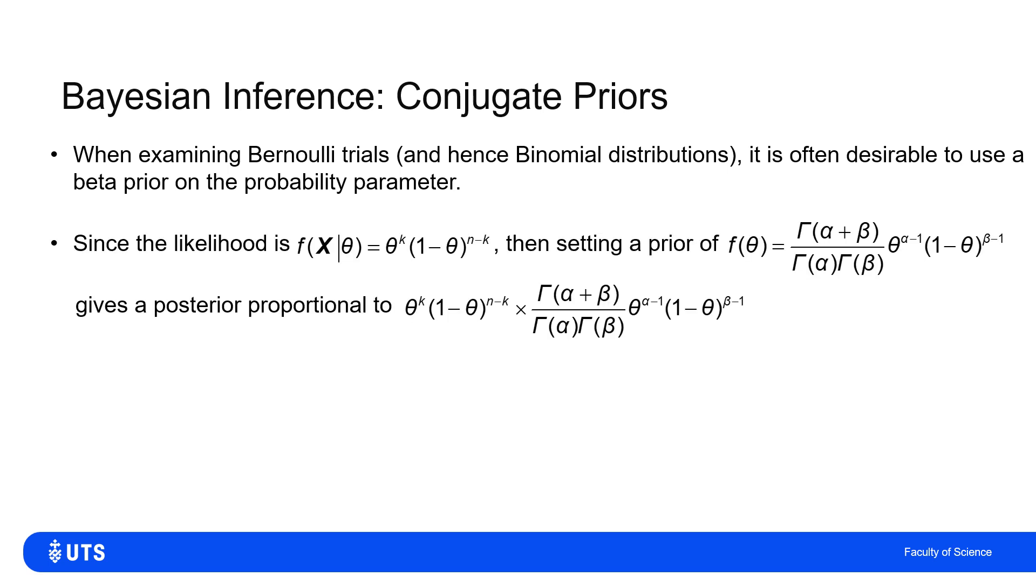The reason for this is that if I start with a prior distribution which is proportional to θ^(α - 1) times (1 - θ)^(β - 1), when I multiply that by the likelihood for some observations, you can easily see that θ^k times θ^(α - 1) simplifies nicely. (1 - θ)^(n - k) times (1 - θ)^(β - 1) simplifies nicely.